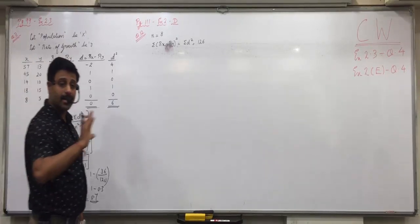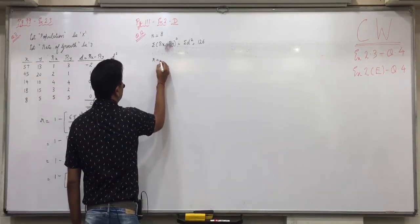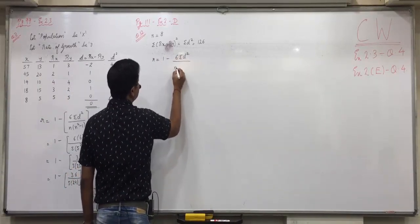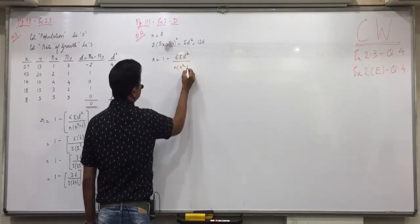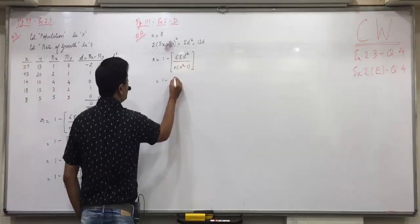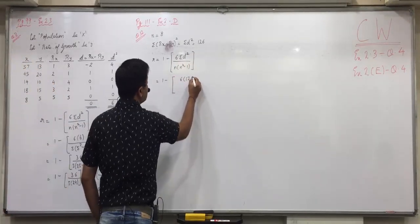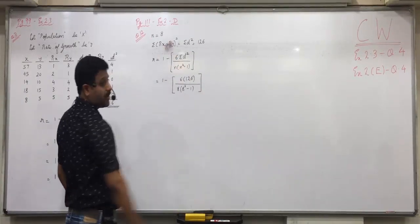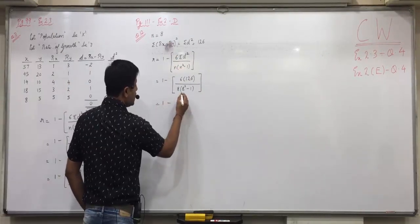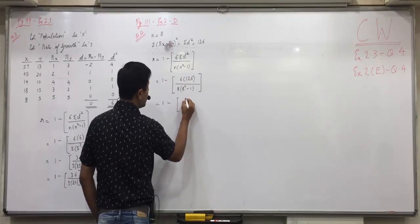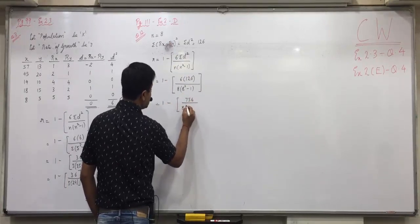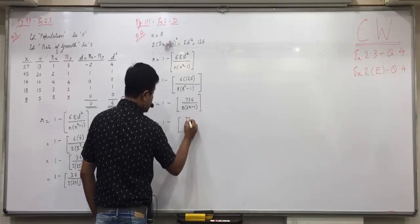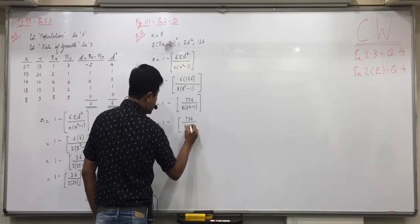All the information is directly given. So r equals to 1 minus 6 sigma d square upon n into n square minus 1. But everyone please put the values: 1 minus 6 into sigma d square 126. Yes, n is 8. So 8 into 8 square minus 1. So 1 minus 756 upon 8 into 64 minus 1. 1 minus 756 upon 8 into 63.